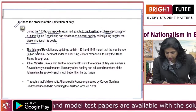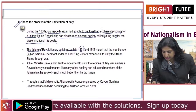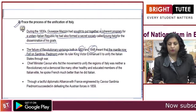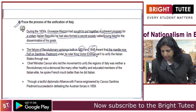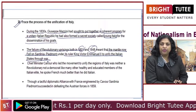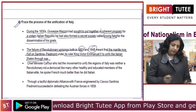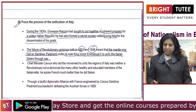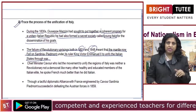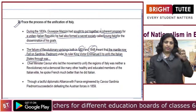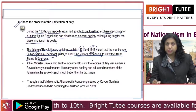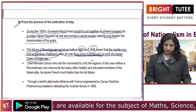The failure of the revolutionary uprisings in 1831 and 1848 meant that the mantle now fell on Sardinia-Piedmont under its ruler King Victor Emmanuel II to unify the Italian states through war. After 1848, there was a need for European countries to form nation states, and when all such uprisings finally failed in Italy, they wanted Sardinia-Piedmont under King Victor Emmanuel II to take the lead to unify the entire country.